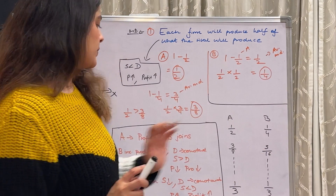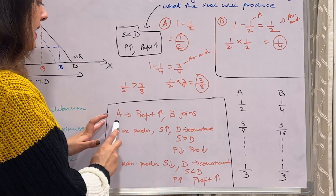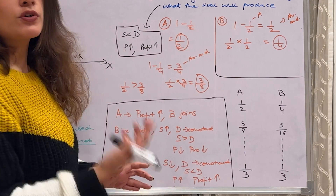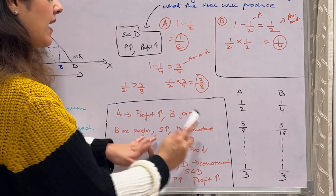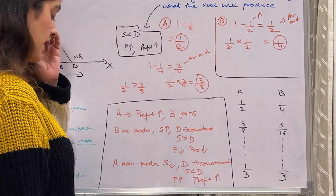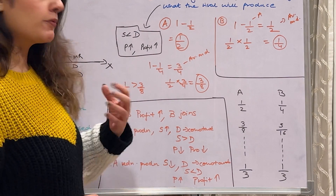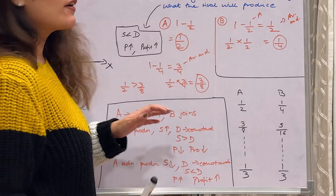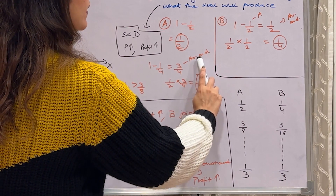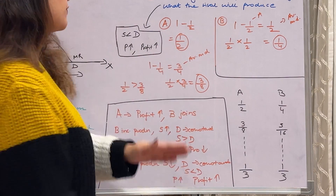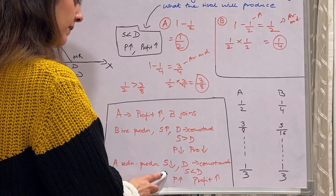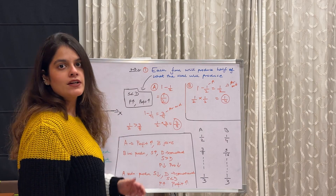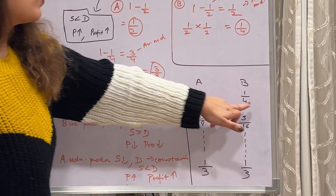When B increases production, supply increases while demand remains constant — supply is greater than demand, so price and profits fall. Now A will reduce its production. A produces half of the remaining available market demand: one minus one fourth equals three fourths available, so A produces half of three fourths, which is three eighths. Supply falls, demand rises again — we're back to the situation where demand exceeds supply and profits rise. This cycle keeps on continuing: one half, one fourth, three eighths, five sixteenths, and so on.